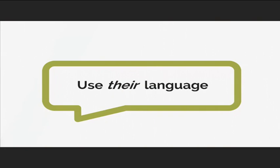Another thing to make material comprehensible is using the learner's language. This applies to any tutorial, not only Python ones. So you don't talk about 'objects' at the very beginning — maybe you use 'things' instead, because people can understand what a thing is. A thing might be a car or a person. But 'object' is a very abstract concept. Try to use their language, not your concepts of the world.